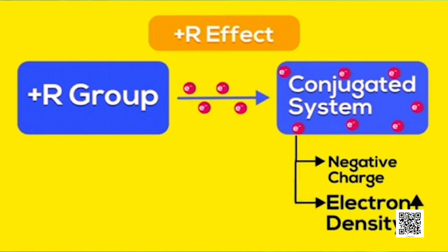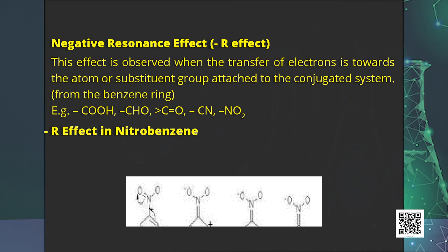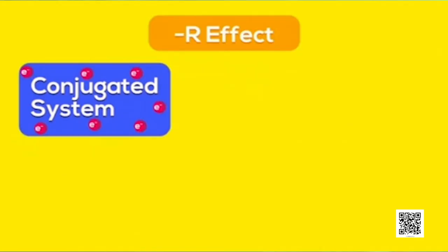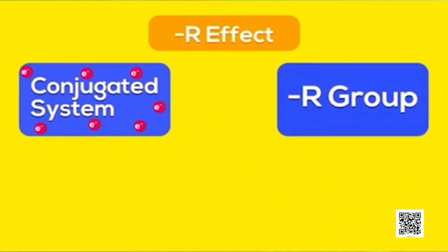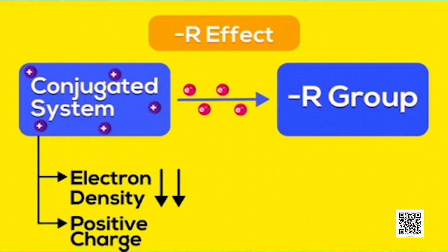The negative resonance effect occurs when electrons are transferred towards the substituent group attached to the conjugated system — that is, away from the benzene ring. Groups with negative resonance effect include nitro, cyano, carboxyl, and carbonyl groups, observed in compounds like nitrobenzene, benzaldehyde, and benzoic acid. In the negative resonance effect, the group withdraws electrons from the conjugated system, denoted by −R or −M, decreasing electron density.